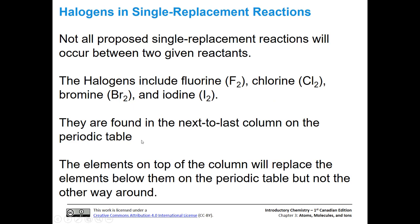Now let's talk about whether a certain single replacement reaction will actually proceed, because not all of them will. There are a few simple rules we can use. We're only going to look at one of them, and that is with the halogens. The halogens are on the periodic table — I'll show you that in a second.